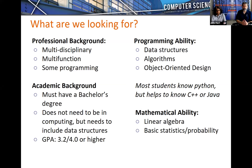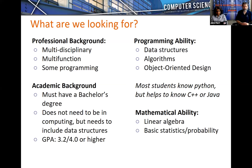At the graduate level, you're expected to get an A in your classes — maybe a B+ or a B. Getting a C at the graduate level is like getting an F at the undergraduate level. The expectations are quite a bit higher.